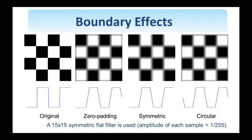So let's look at this specific example. You see here on the left a synthetic image. It has 200 by 200 pixels, and it's a binary image, and therefore each of these squares is 50 pixels wide and tall. We convolve this image with a 15 by 15 symmetric flat filter. So the impulse response of the filter is centered at 0, 0. The height of each sample of the impulse response is 1 over 255, so that if I sum up all the samples, the sum is equal to 1.